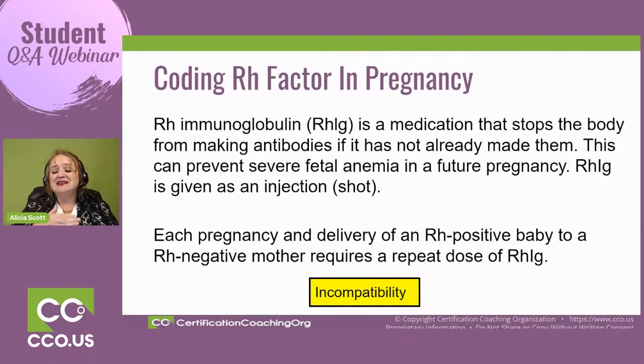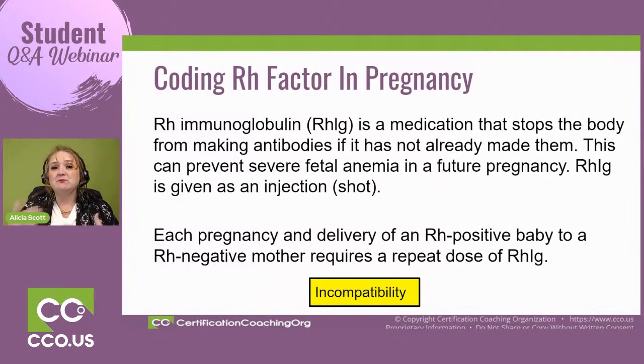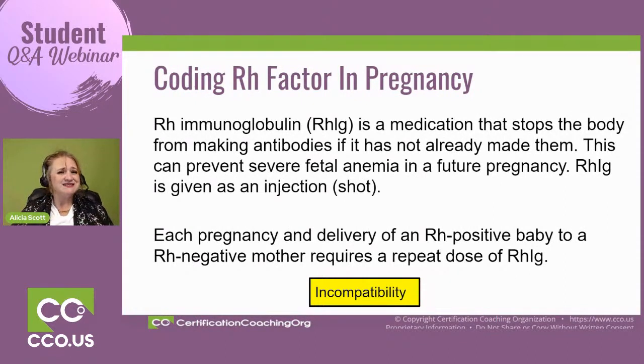It is something that may have to happen more than once, because it's kind of like an allergic process. If you're allergic to something and you want to desensitize yourself, you take shots to build up your immune system. With every pregnancy and delivery where the baby is Rh positive, you're going to require another dose of RH immunoglobulins so that we don't have that incompatibility occurring again.